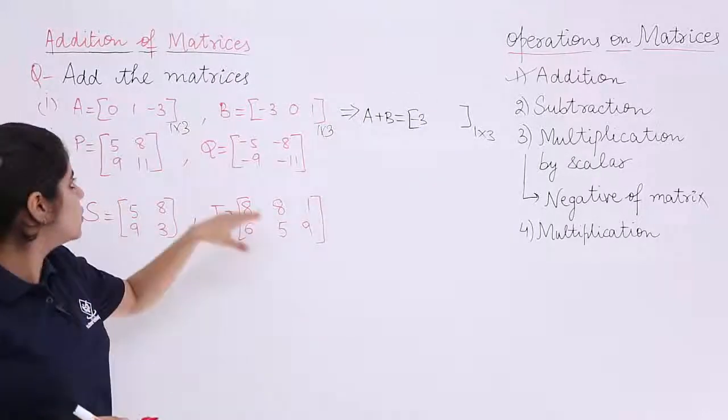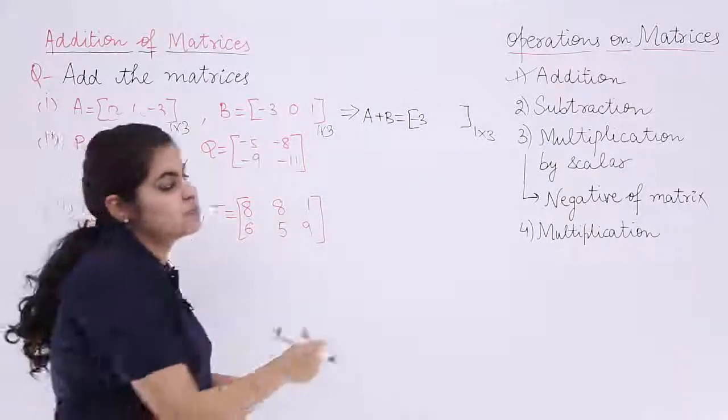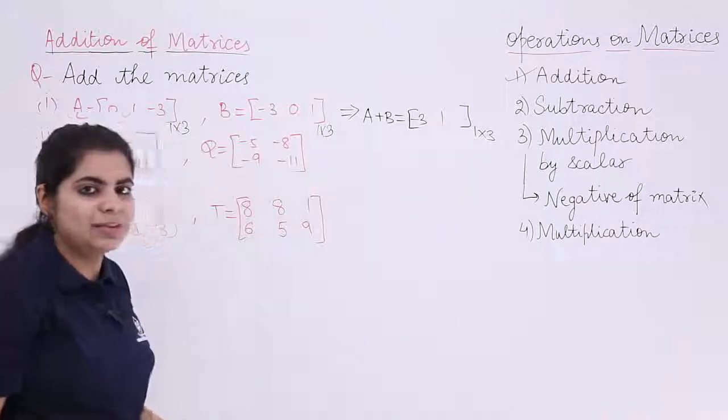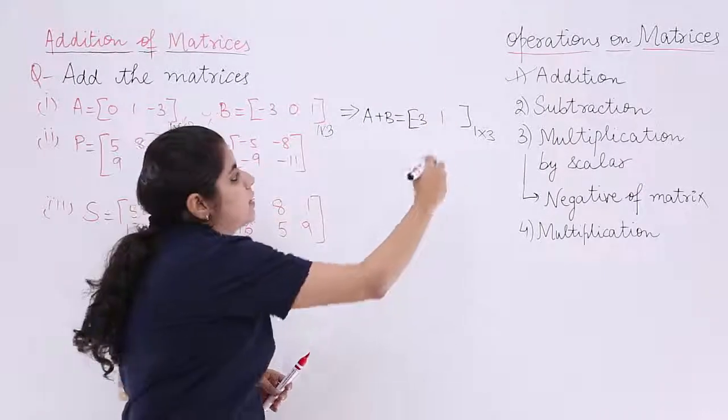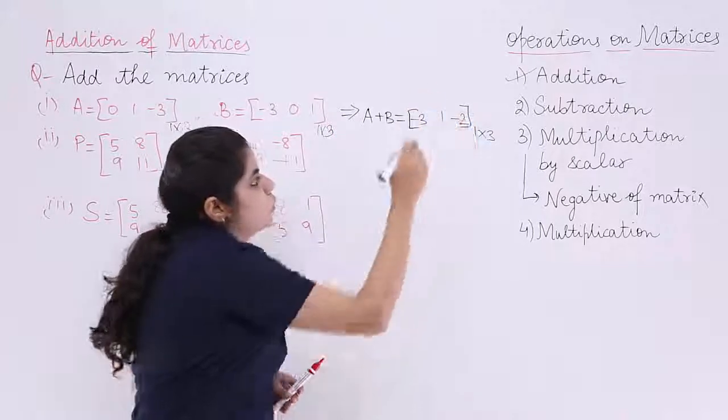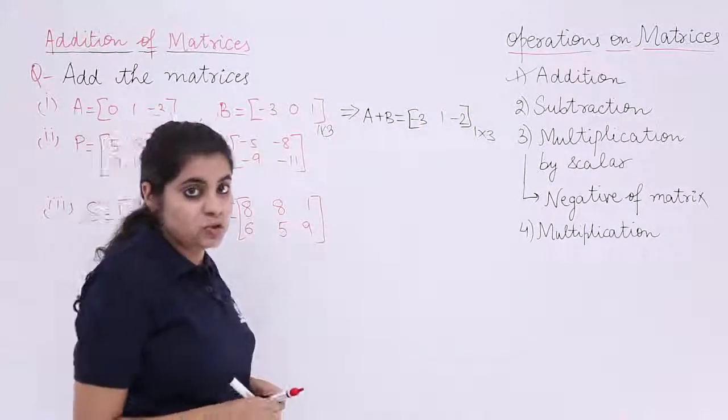What about the next element? 1 and 0 gives me 1. What about the next one? Minus 3 and 1 gives me minus 2. So, here we go with the first solution.